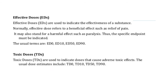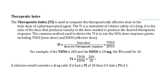Toxic doses are used to indicate the doses that cause adverse toxic effects; the usual dose estimate includes toxic dose 0. The therapeutic index is used to compare the therapeutically effective dose to the toxic dose of pharmaceutical agents. The TI is a statement of relative safety of a drug — it is the ratio of the dose that produces toxicity to the dose needed to produce the desired therapeutic response. The common method to derive the therapeutic index is TD50 divided by ED50.